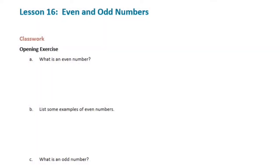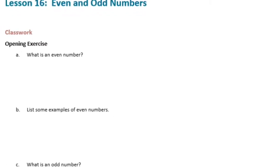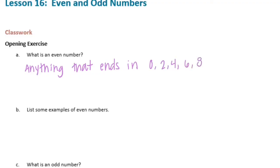Even and odd numbers. What is an even number? When I think of even numbers, it's like 2, 4, 6, 8, 10, 12. Anything that ends in 0, 2, 4, 6, or 8. So whether that be 100 or 1248, as long as it ends in a 0, 2, 4, 6, or 8, it will be an even number.